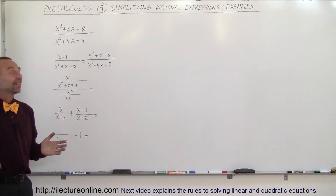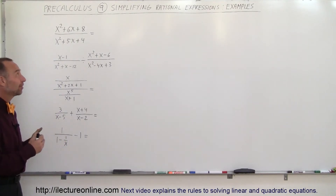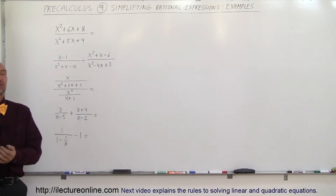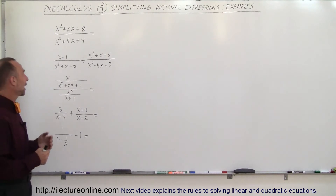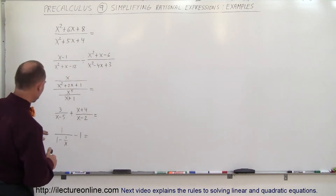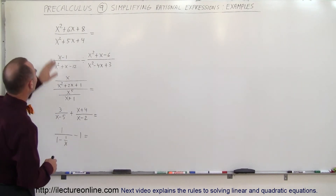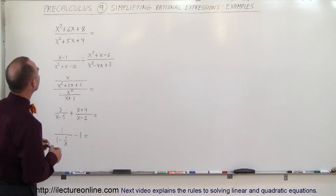Welcome to Electron Online. Now let's see some examples on how to simplify rational expressions. We have five examples here — let's start with the first one.